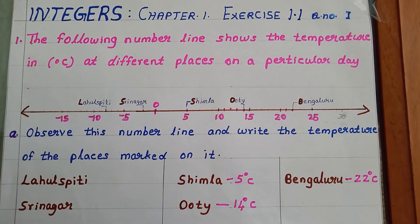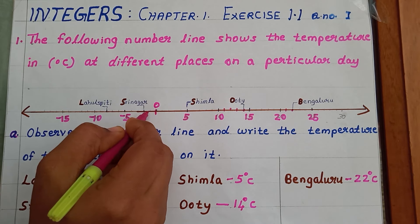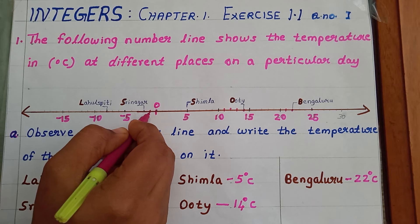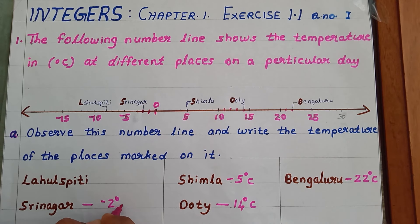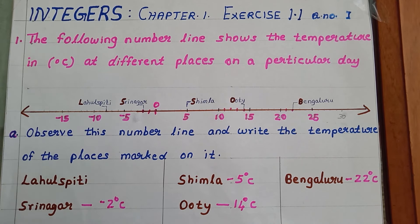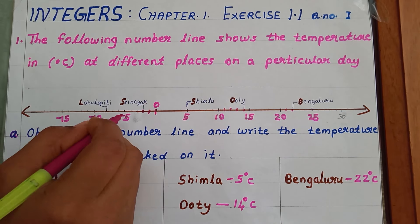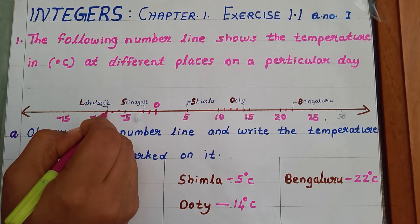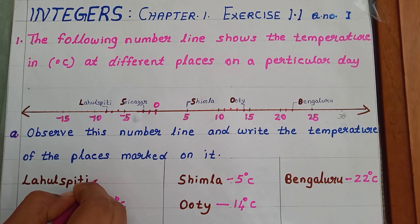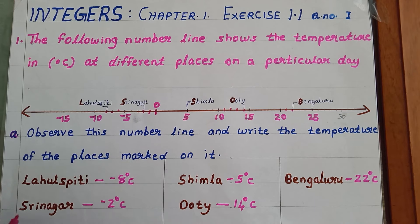Coming to the left side, you can see Srinagar. Starting from 0, this point is minus 1 and here it is minus 2. So here I can write down minus 2 degrees Celsius. And the next one is Lahul Spiti — minus 5, minus 6, minus 7, minus 8. So here I can write down minus 8 degrees Celsius.